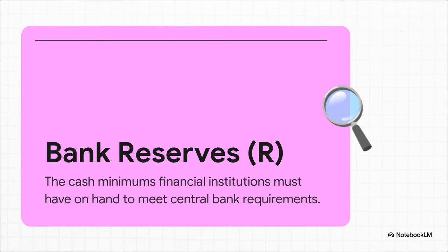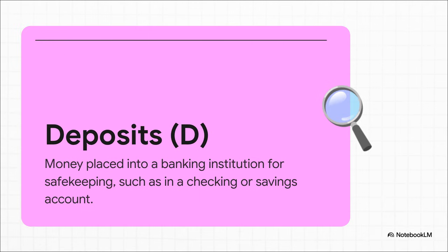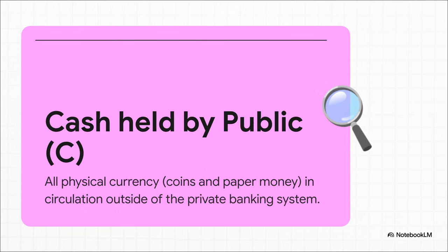Next, we've got bank reserves, or R. When you deposit money into your account, the bank can't just turn around and lend all of it out. It's legally required to hold a certain percentage of it back — in the vault, so to speak. These reserves ensure the bank always has enough cash on hand for when people want to make withdrawals. Then there are deposits, or D. This is probably the one you're most familiar with — it's the money that you and I put into our bank accounts, that digital number you see on your banking app. It's also the giant pool of money that banks use to make loans. And finally, piece number four: cash held by the public, or C. It's literally the paper money and coins in your wallet, in your purse, or maybe even stuffed under your mattress — all the physical cash living outside of the banking system.